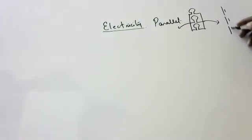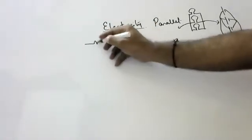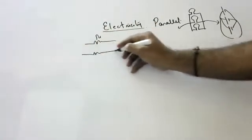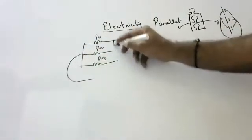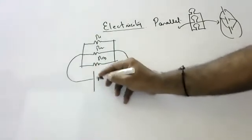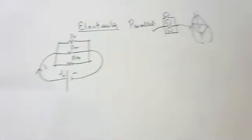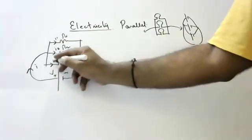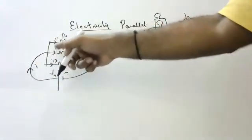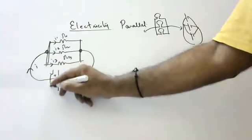Suppose these are the batteries — all positive terminals connected to one end, all negative terminals connected to another end; that is called parallel connection. If resistors are there, imagine three resistors R1, R2, R3 connected in parallel. All are connected to one end and another end with a battery of potential V and current I. The current I, after coming here, divides into I1, I2, I3, but all of them are under the same voltage.